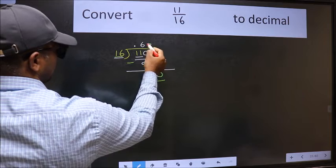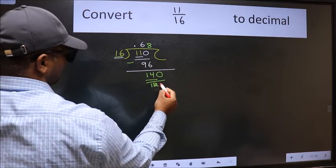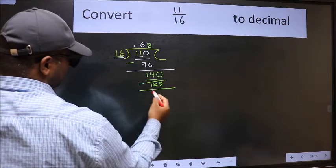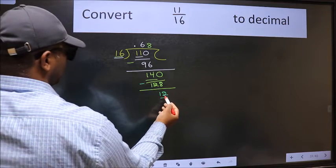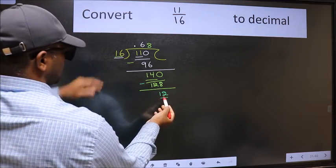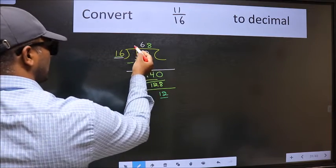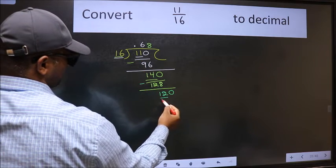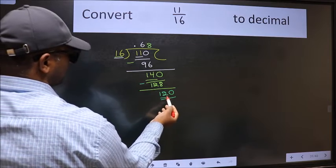Now here 12 and here 16. 12 is smaller than 16 and we already have the decimal, so we can directly take 0, making 120. A number close to 120 in the 16 table is 16×7=112. Now we subtract and get 8.